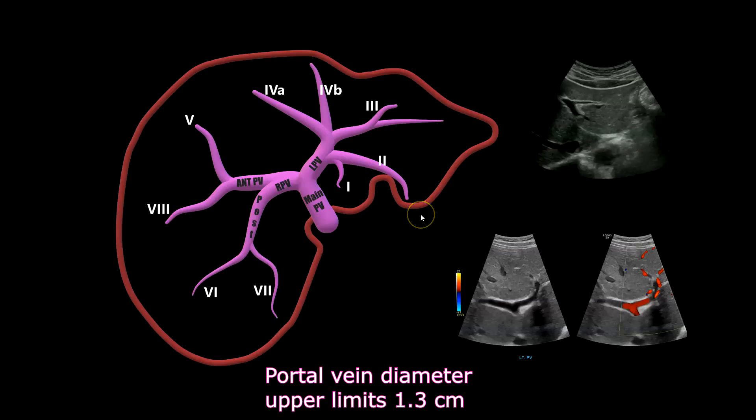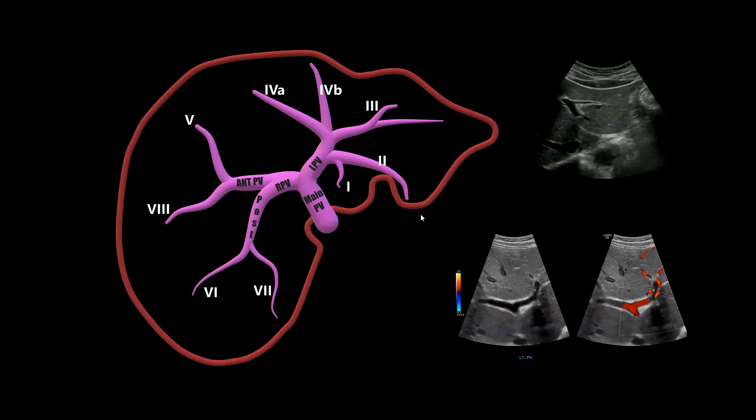The normal diameter of the portal vein in adults is usually one centimeter or less. In some cases it can go up to 1.3 centimeters — that would be the upper limits. I have other videos on liver segmental anatomy that go more into depth on the ultrasound versions and portal venous Dopplers. Take care, bye.